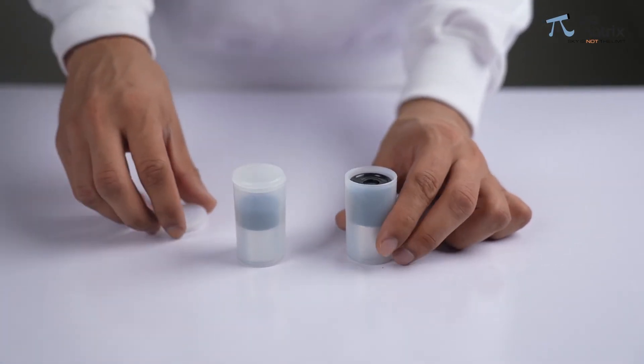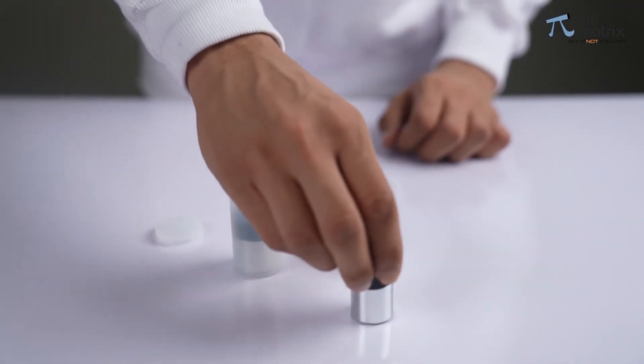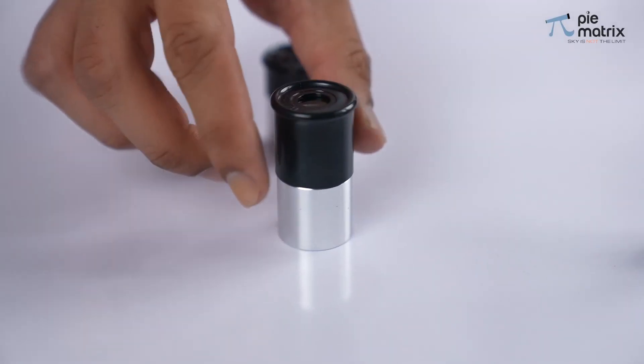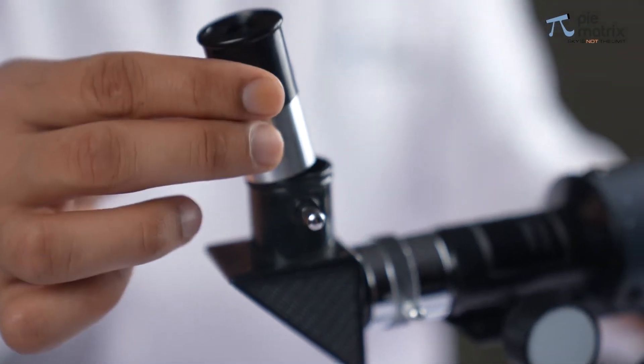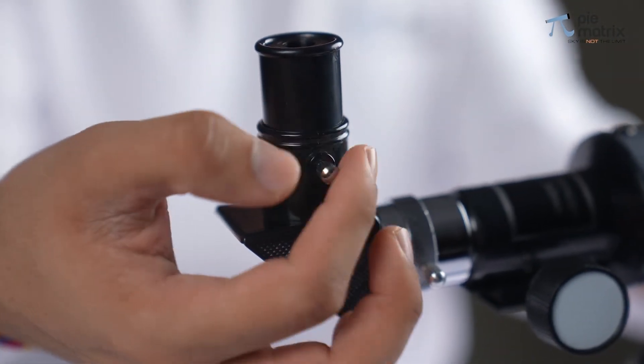All the eyepieces are stored in a waterproof plastic case. Now the real magic happens. Choose any of the eyepieces, insert it into the barrel of the star diagonal and tighten the screw.